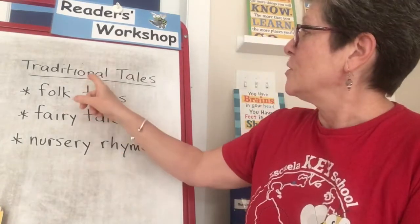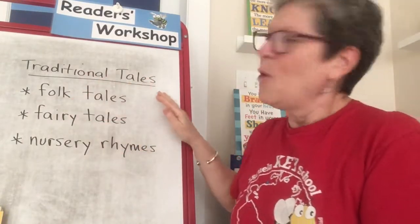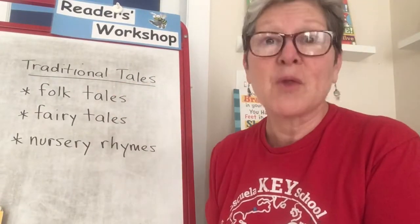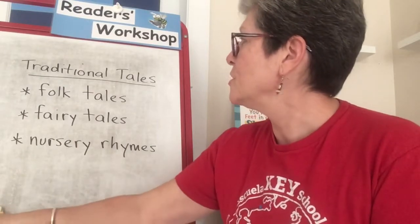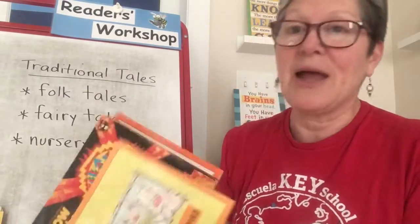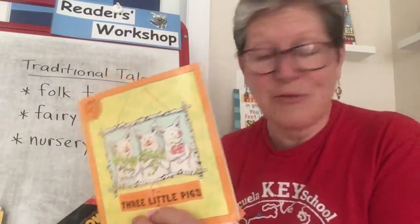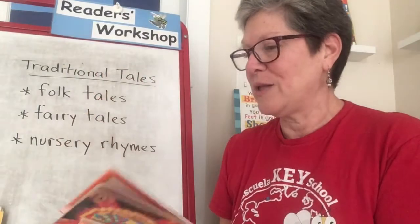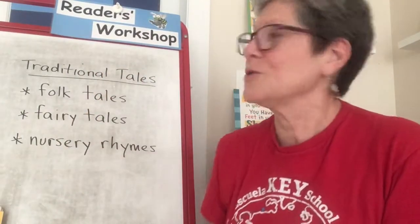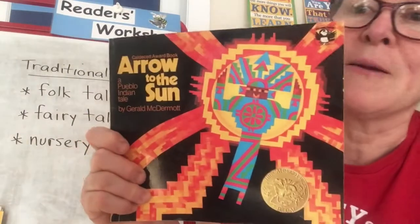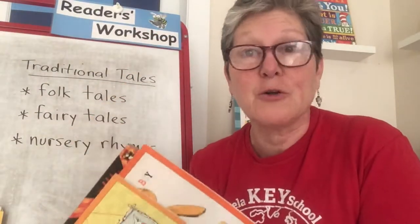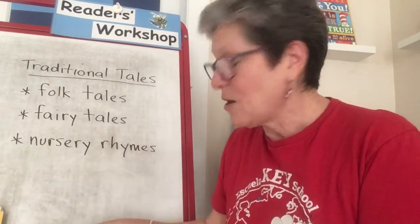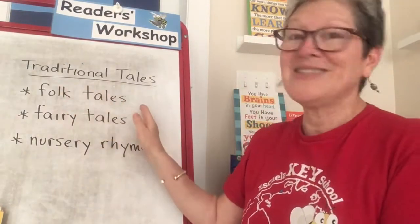We have what we call traditional tales, and one way to think of them is breaking them down into three groups. Folk tales are traditional stories in some cultures, like the Three Little Pigs you may have heard of, or the Gingerbread Stories that we enjoyed. But Native American cultures have traditional folk tales too — Arrow to the Sun would be an example. All different cultures, different countries in Africa, different places all around the world in Asia have different folk tales.